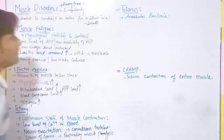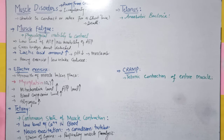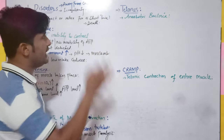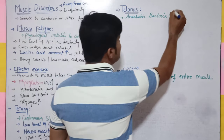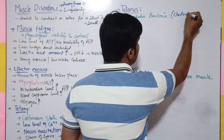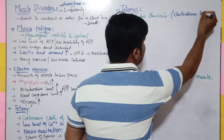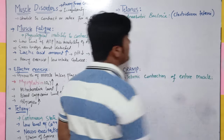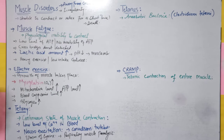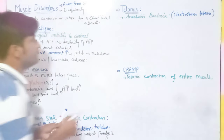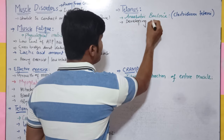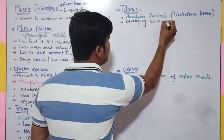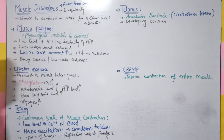Tetany jab extreme level par chali jaati hai to severe ho jaati hai. Uske baad next hamare paas aata hai tetanus. Tetanus ke liye causal agent hota hai ek anaerobic bacterium jis ka naam hai Clostridium tetani. Yeh bacteria developing countries — Pakistan, Bangladesh, India — mein bahut zyada prevalent hai jahan death rate is ki wajah se more than forty percent hai.